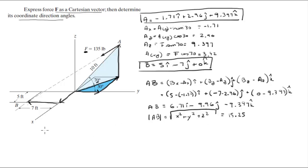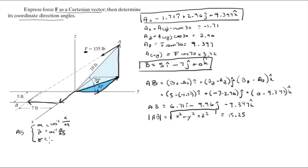Since we have the magnitude and each of the component values, we can find the three coordinate direction angles. You find them by doing the cosine inverse of X over the magnitude, cosine inverse of Y over the magnitude, and cosine inverse of Z over the magnitude. These three angles come out to be 63.9 degrees, 130.78 degrees, and 128.04 degrees.